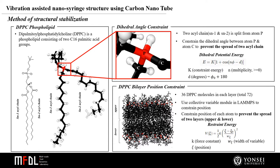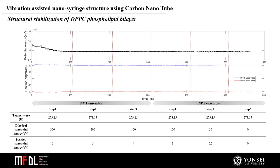To imitate skin tissue, we adopted a DPPC phospholipid bilayer membrane, which has both hydrophilic head group and hydrophobic tail group. Prior to penetrating carbon nanotube into the phospholipid bilayer, we tried to stabilize the structure of the DPPC bilayer membrane. Therefore, we constrain the dihedral around atom phosphorous to prevent the spread of two acyl chains. We also constrain position of the atoms to prevent the spread of the two upper and lower layers. We conducted simulation while reducing constraint energies, and confirmed that the potential energy is stable at each equilibration phase and the position of DPPC upper and lower head groups is constant during the equilibration.